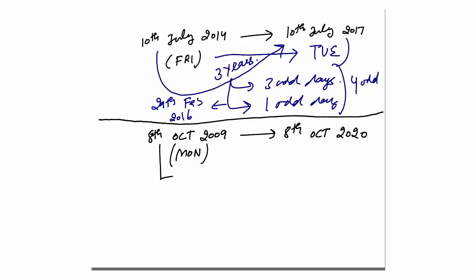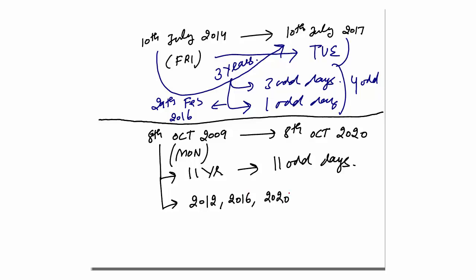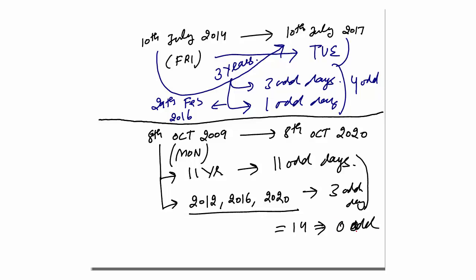One more example: 8th October 2009 to 8th October 2020 — same date. Year gap is 11 years, so straight away 11 odd days. Now count how many 29th February come: 2012, 2016, and 2020 (since 8th October is the date, 29th February 2020 falls within the range). That is 3 times, so 3 extra odd days. Total: 11+3=14 odd days. 14÷7 gives remainder 0 — zero odd days — so 8th October 2020 will be the same day: Monday.